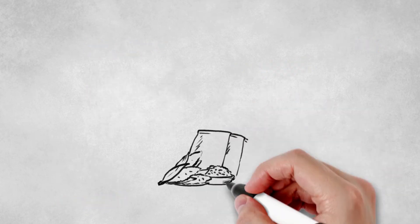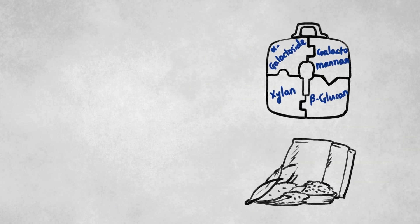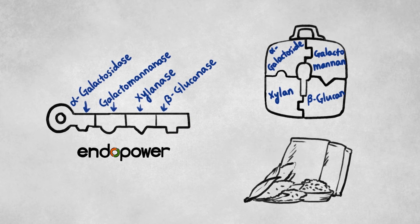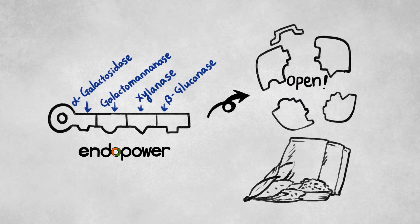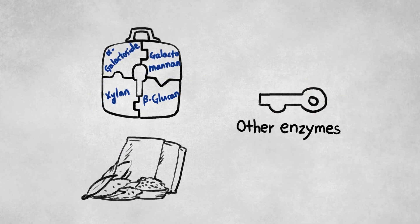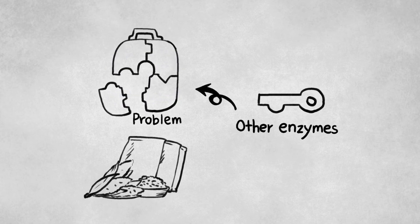Considering the fluctuated NSP contents, feed formulation becomes flexible and feed quality consistency becomes important. Hence, it is crucial to use a proper enzyme profile according to feed ingredient variations. And here is where multi-enzyme product comes into play.